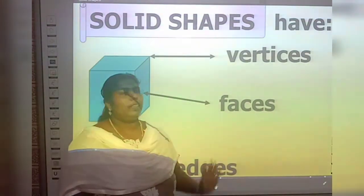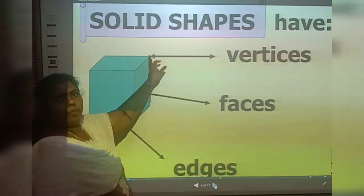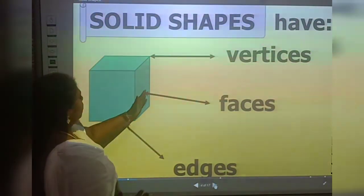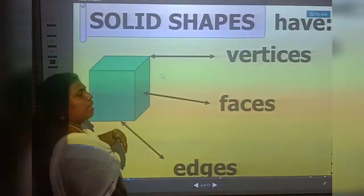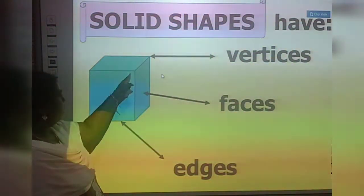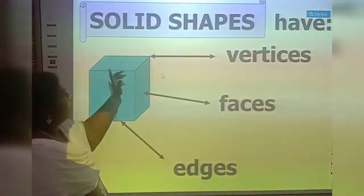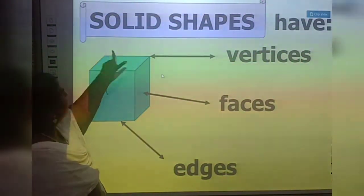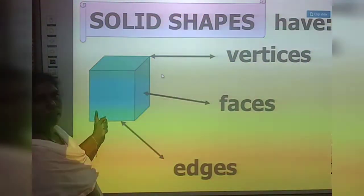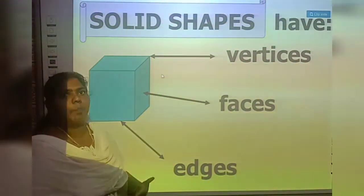Solid shapes have vertices, faces, and edges. Vertices means the corner. Faces means the flat faces — one flat face on this side, the opposite side, front and back side. Edges means the lines. You can count the faces, edges, and vertices. We are going to discuss about these for different solid shapes.